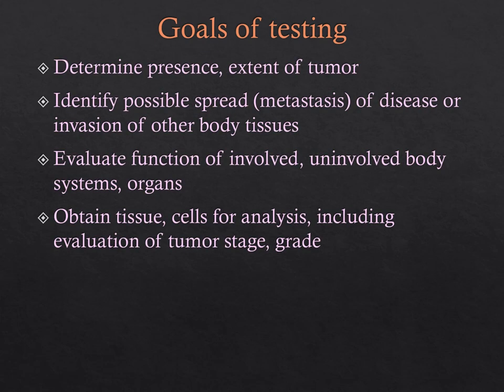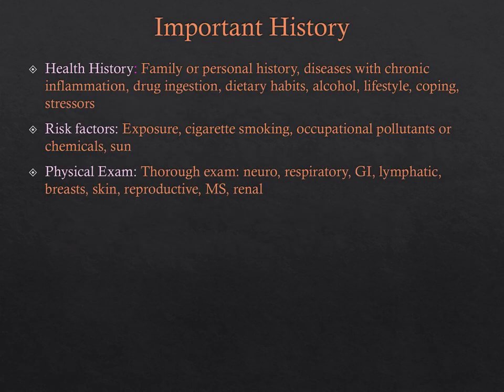The goals of testing are to determine the presence and extent of the tumor, identify any possible spread or metastasis, evaluate the function of involved or uninvolved body systems and organs, obtain cells via biopsy for analysis, and evaluate the stage and grade of the tumor. For history, we get a health history, determine risk factors, and do a physical exam — a thorough head-to-toe assessment, since cancer can affect many different areas of the body.